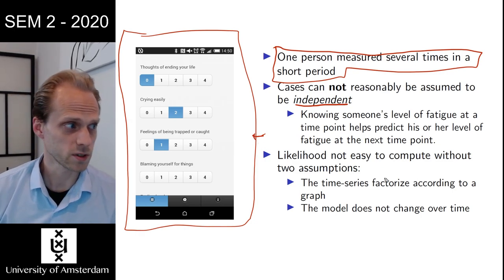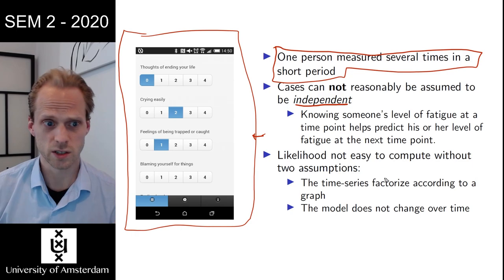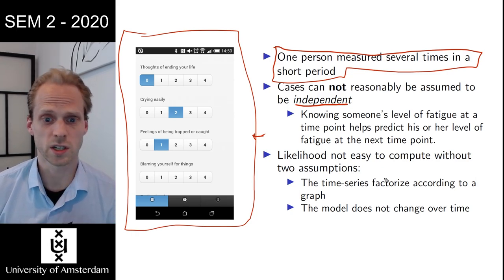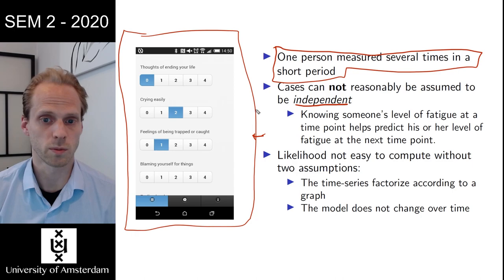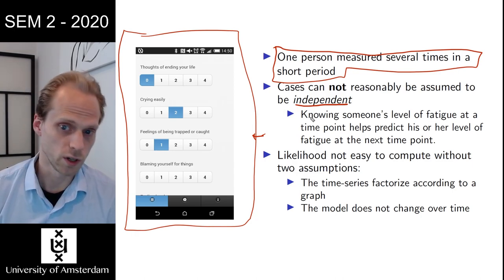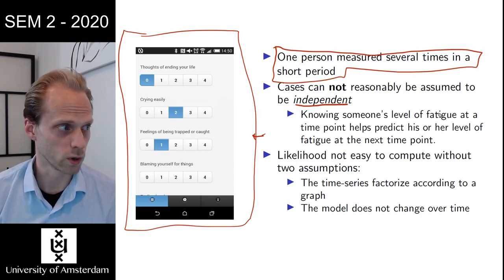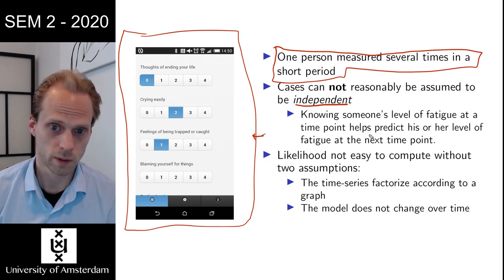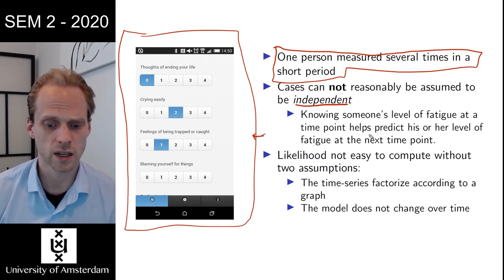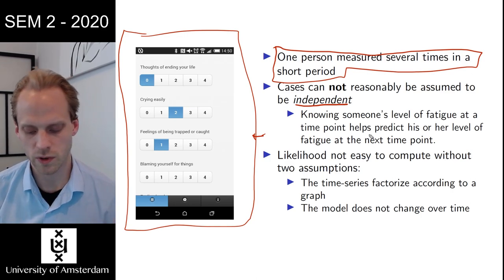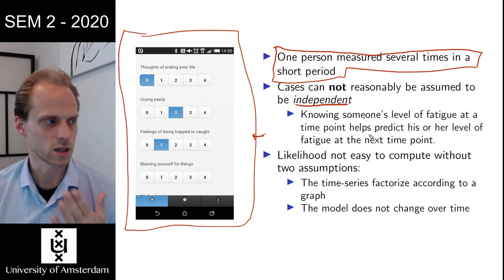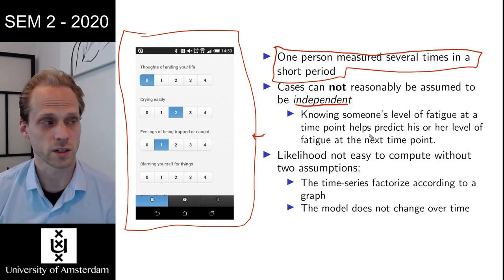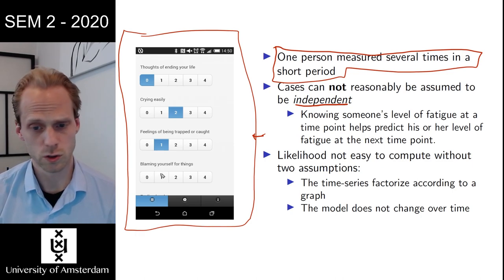In time series data, those violations or the temporal dependencies is actually what you're interested in. So we cannot assume it to be independent. If we know that someone is very tired at nine o'clock, we can predict that person will probably still be very tired at 10 o'clock, regardless of if this person is overall very tired or not.